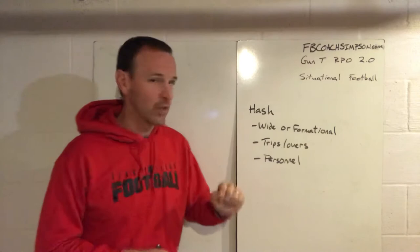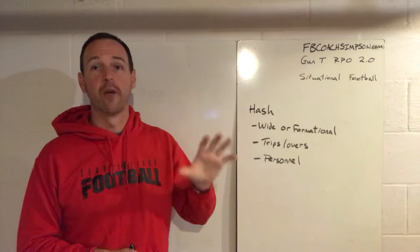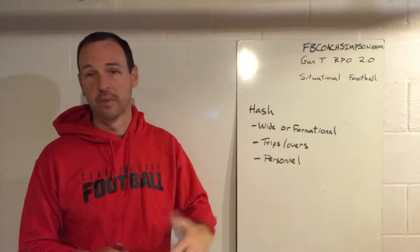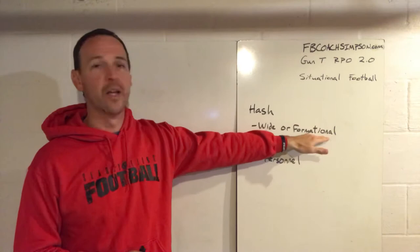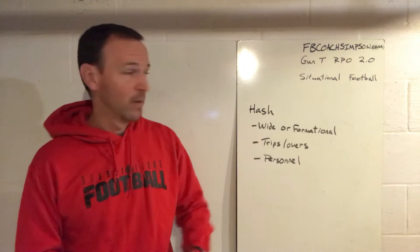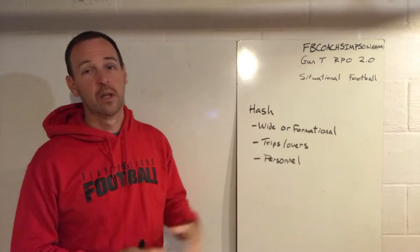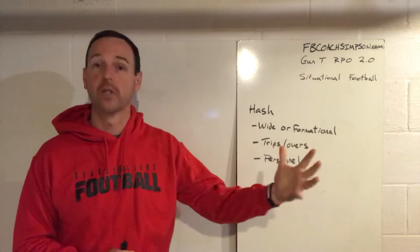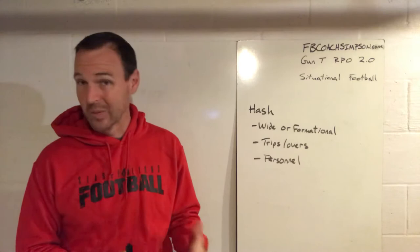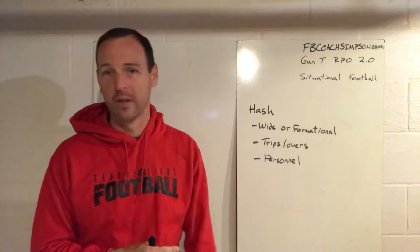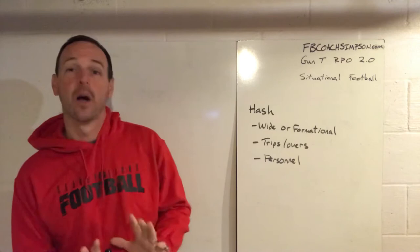First, when you're on the hash, you have to figure out how the defense is attacking you — are they lining up by formation? If you're a tight end wing team like we are, teams would often attack us formationally, more concerned with the strength of our offense. However, if you're in a more balanced offense, coordinators will often call their strength to the wide side — slanting their front to the wide side, rolling coverage, or offsetting a bonus player to the wide side, like in a 3-3 defense or a four-front defense.